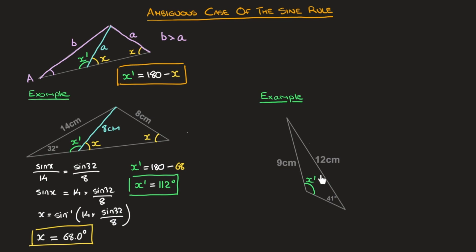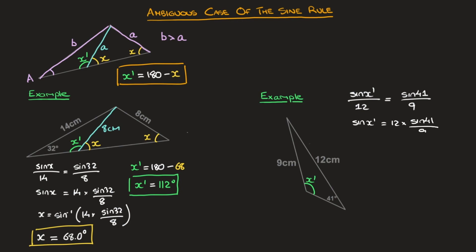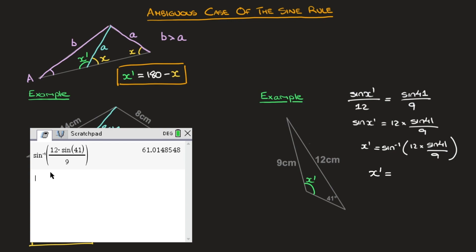Let's find x prime using the sine rule. We have its opposite side length of 12 centimeters and another angle-side pair, so we state sine of x prime over 12 equals sine of 41 over 9. Multiplying both sides by 12 gives sine of x prime equals 12 times sine of 41 over 9. Applying inverse sine to both sides gives x prime equals inverse sine of 12 times sine of 41 over 9, which rounds to 61.0 degrees.